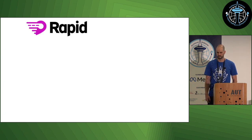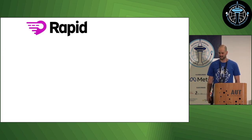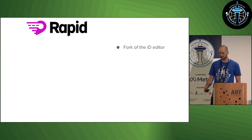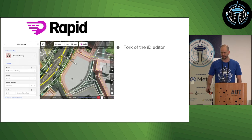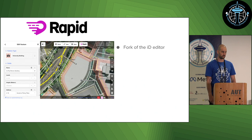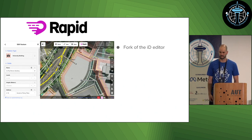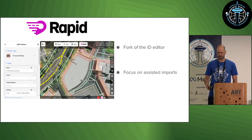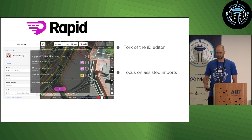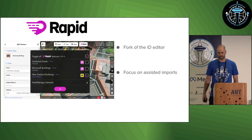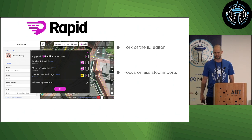Rapid is the tool that has been set up to help with this. Rapid is a fork of the iD editor, so the 60% of people who have edited OSM before will be familiar with it — it looks very similar. The difference is it has a Rapid button at the top for adding layers to import. You click on that button, you get a list of layers, for example the New Zealand buildings dataset shown in yellow.